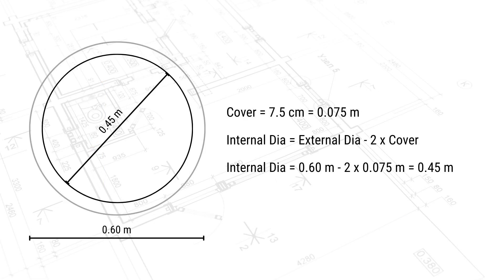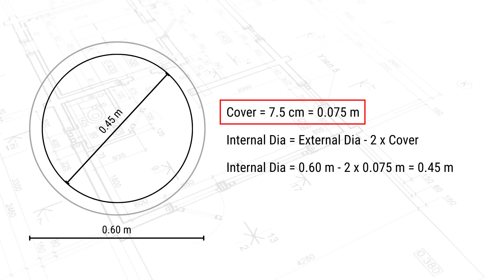For the spiral reinforcement, I also need the total length and the weight per linear meter. The key point is that if the pile diameter is 0.6 m, there is a cover — the distance between the reinforcement and the outer perimeter — which is typically 7.5 cm or 0.075 m.